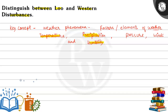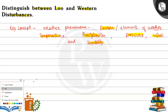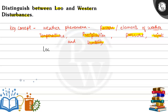Temperature, precipitation, humidity, pressure, and winds — they are the factors of weather. Now, let us see the difference between Loo and Western Disturbances.